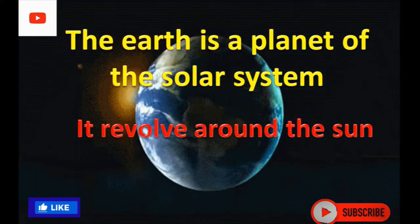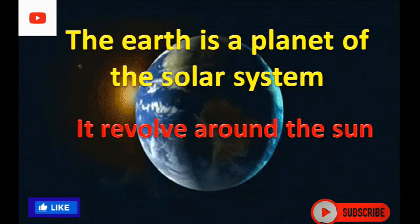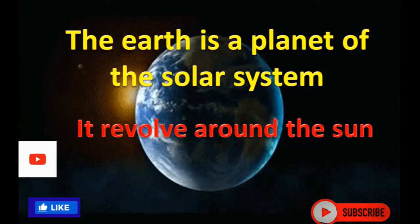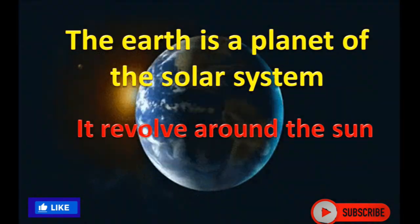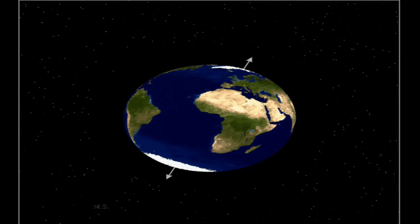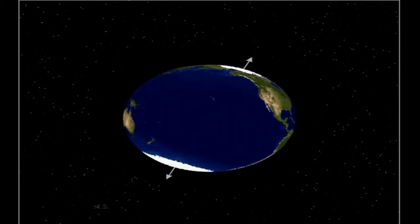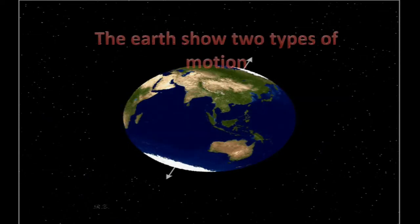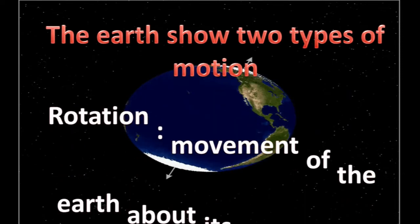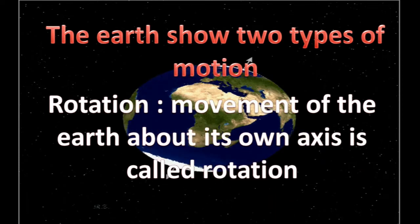The earth is a planet of the solar system. It revolves around the sun. The earth shows two types of motion: rotation and revolution.